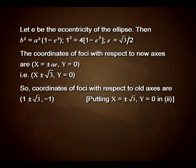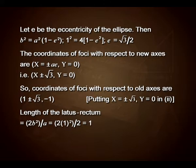So, coordinates of foci with respect to the old axes are (1 plus or minus √3, minus 1). This we have obtained by putting X equals plus or minus √3 and Y equals 0 in equation number 2. Length of the latus rectum therefore becomes 2b² upon a, that is 2 into 1² upon 2, which gives us 1.